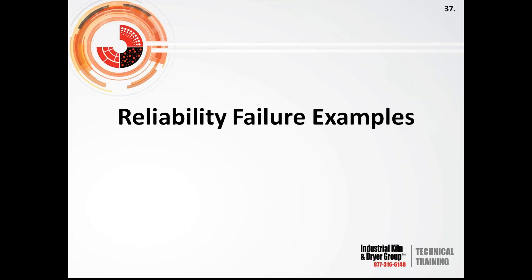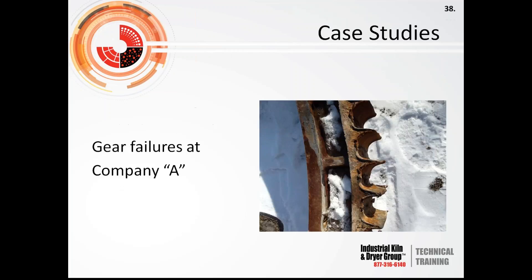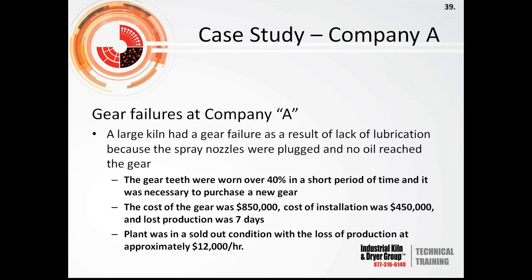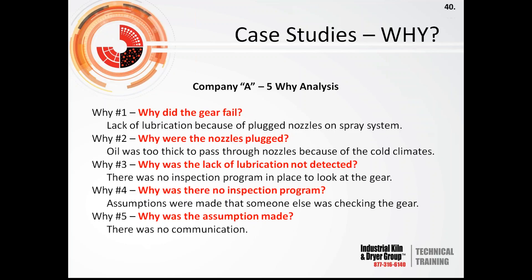Let's look at a couple of reliability failure examples. Gear failure at Company A: a large kiln had a gear failure as a result of lack of lubrication because the spray nozzles were plugged and no oil reached the gear. The gear teeth were worn over 40% in a very short period of time, requiring purchase of a new gear. Cost of the gear: $850,000. Cost of installation: $450,000. Lost production: 7 days. The plant was in a sold-out condition with loss of production rated at approximately $12,000 per hour — a very significant and damaging situation.